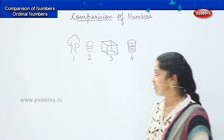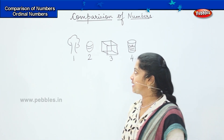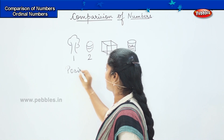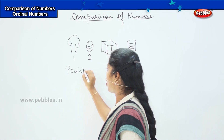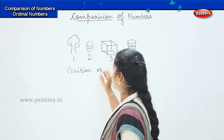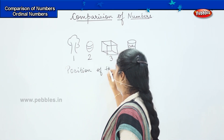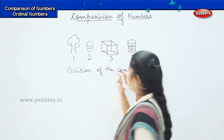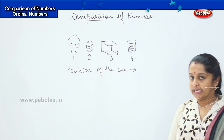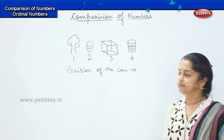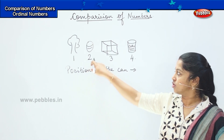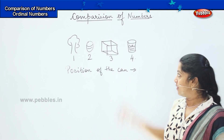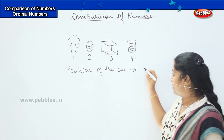My first question is: can you tell me the position of the can? Among the given pictures, can you tell me the position of the can? Is it one, two, three, or four? Very good — it is the fourth one.